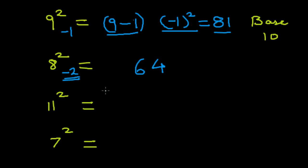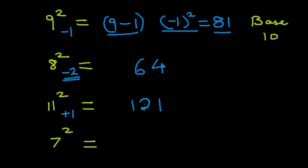11 squared. 11 minus 10 is plus 1. We find the square of 1, that is 1. Then we add 11 plus 1, which is 12. So the answer is 121.